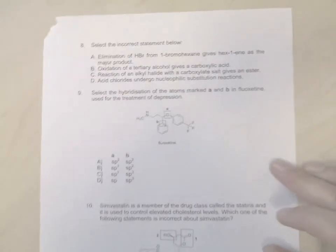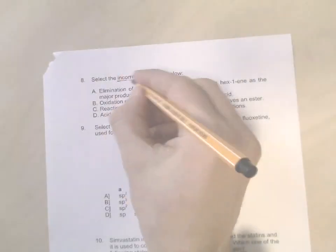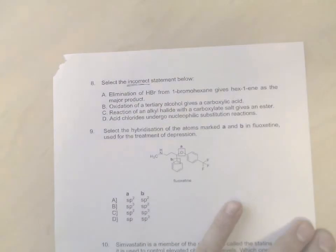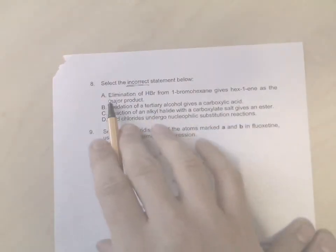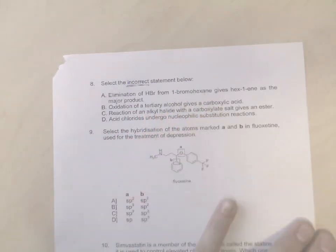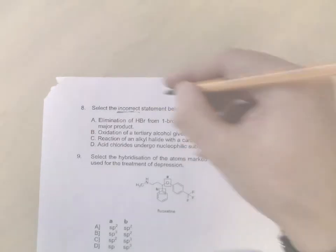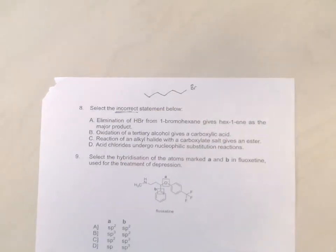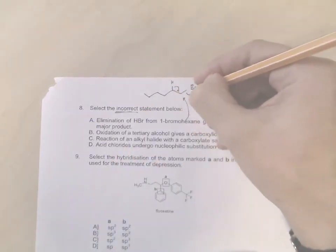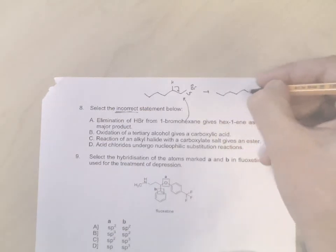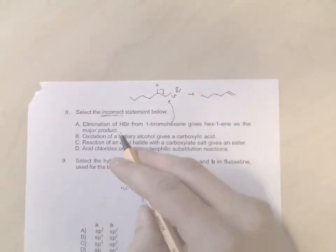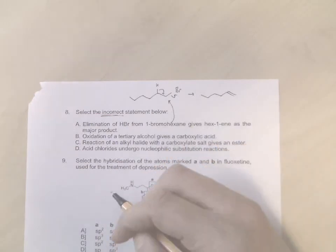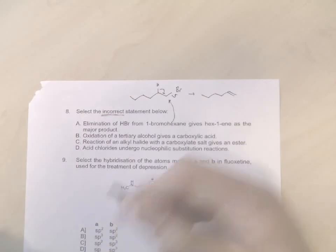And then finally, last few questions. We're now looking for the incorrect statement, so please don't confuse yourself there. Okay, elimination of HBr from one-bromohexane. What's that? Well first of all you need to know what that molecule looks like. So let's draw hexane: one, two, three, four, five, six, with a bromine on carbon one. So this is one-bromohexane. If we eliminate HBr from it, then the product you get is one, two, three, four, five, six - it's hex-1-ene.